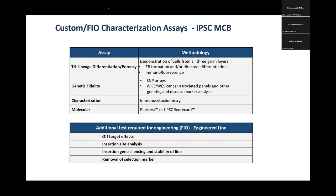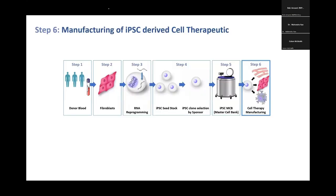Additional tests required for engineering include off-target effects, insertion site analysis, silencing of genes, stability of the line, and if there is a selection marker, whether it has been removed or whether it causes a foreign DNA response.